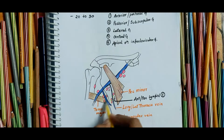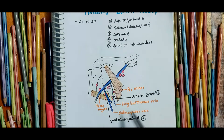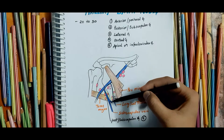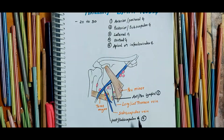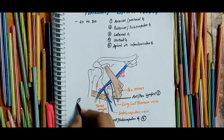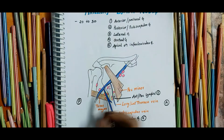Now coming to the second group, the posterior or subscapular group. They lie on the posterior axillary fold along the subscapular vein. They receive lymph from the upper half of the trunk posteriorly and from the axillary tail of the breast.